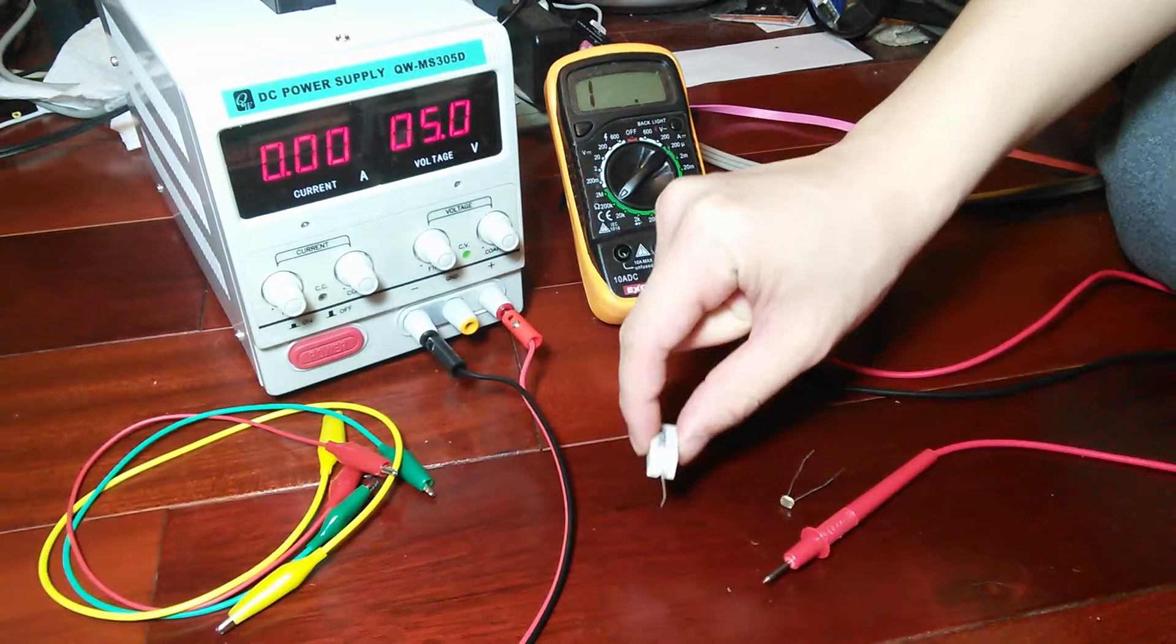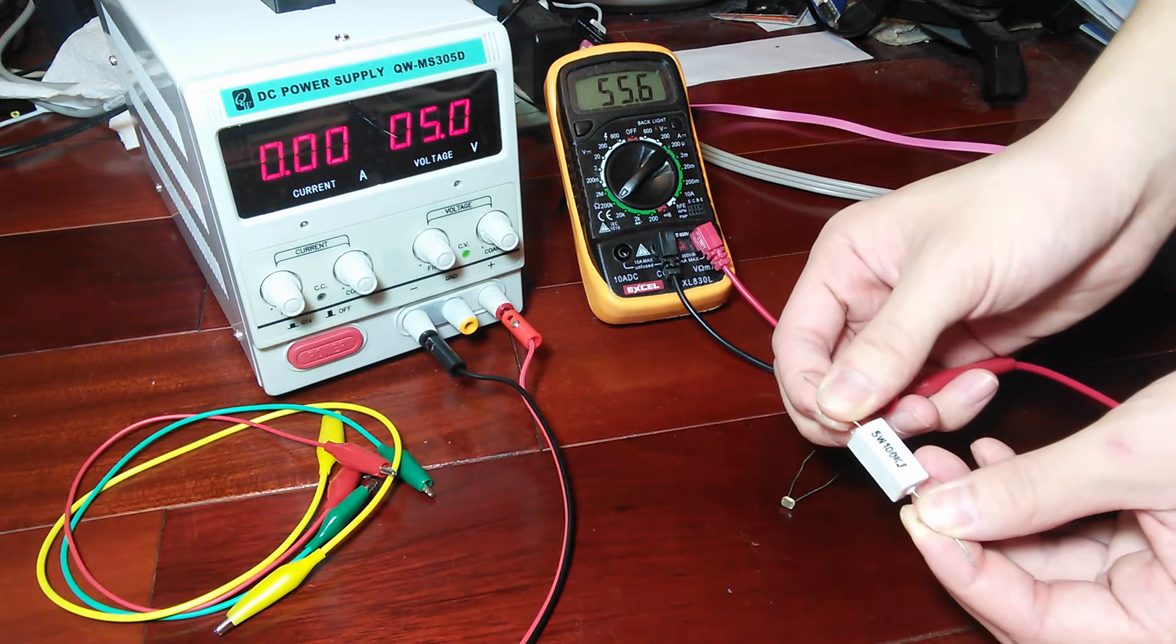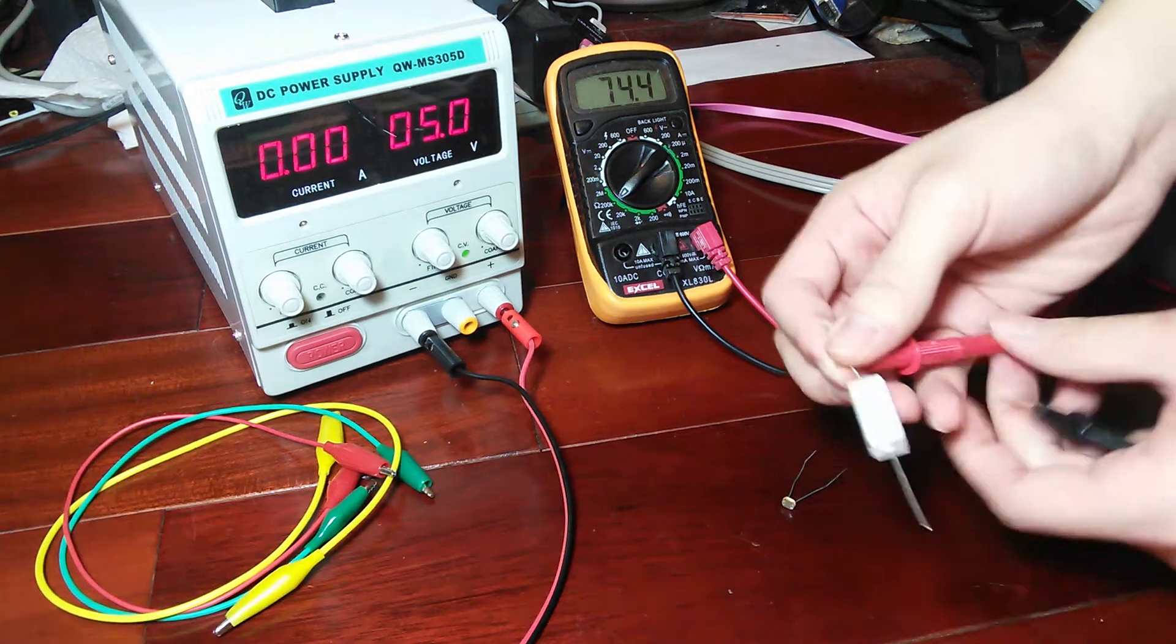Now, this right here is just a constant resistor. It has a constant resistance of about 60 kilo-ohms, should be somewhere around there.